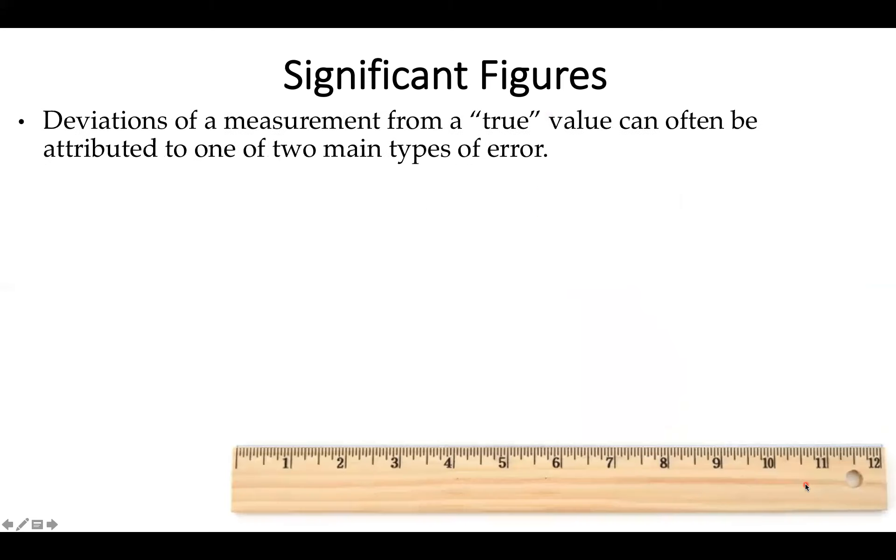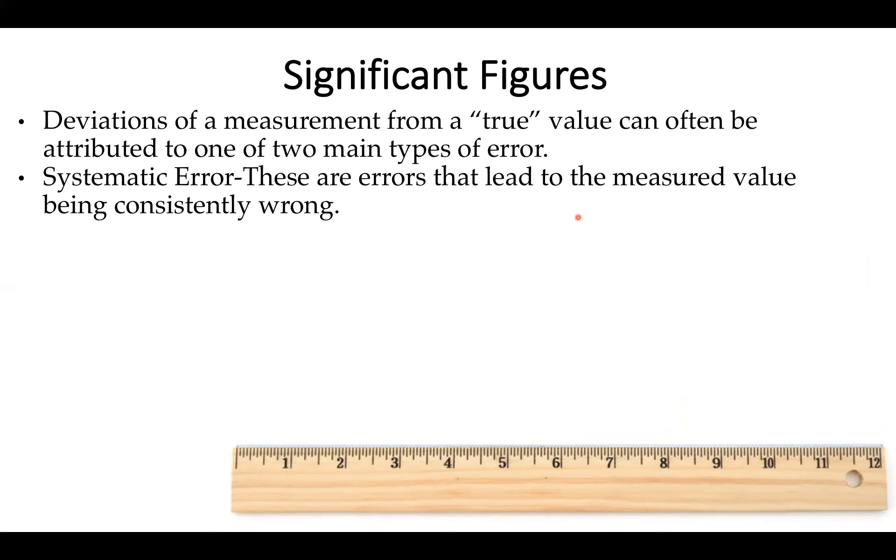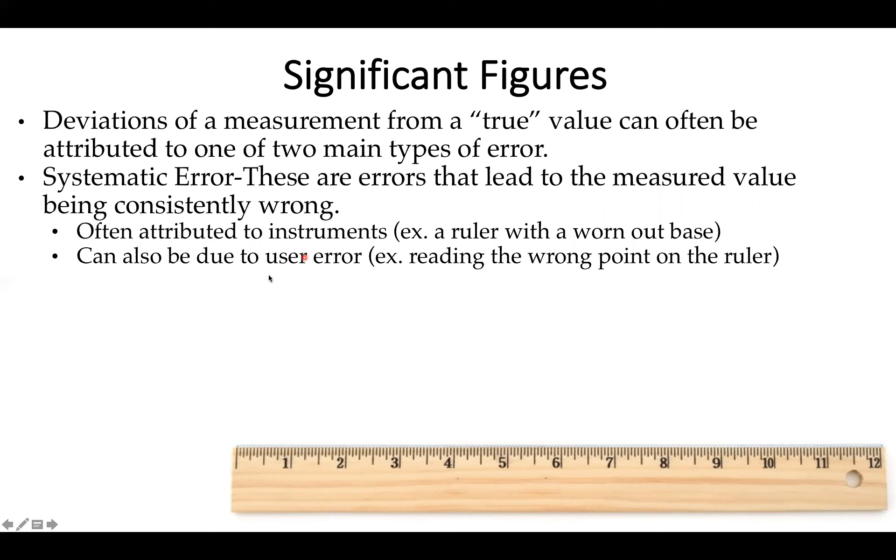So deviations from a true value or the ideal value are often due to two major types of error, the first of which is systematic error. So these are going to be errors that lead to the measured value being consistently wrong. This tends to be often attributed to instruments. So you can have a ruler with a worn out base. You don't know what your zero mark is. So all your distances are going to be off by whatever that eroded distance is. But one of the things that I like to emphasize is a lot of people think about systematic error only being due to instruments. But it's often just as likely due to user error.